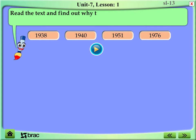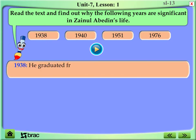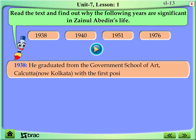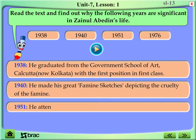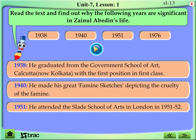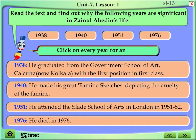Read the text and find out why the following years are significant in Zainul Abidin's life. 1938: He graduated from the Government School of Art, Calcutta (now Kolkata), with first position in first class. 1940: He made his great famine sketches depicting the cruelty of the famine. 1951: He attended the Slade School of Arts in London in 1951–52. 1976: He died. Click on every year for the answer.